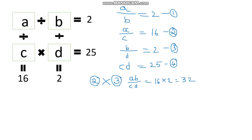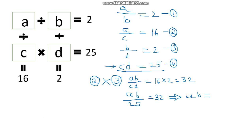We know from equation number 4 that c·d equals 25. Substituting this in: a·b divided by 25 equals 32. By cross multiplication, a·b equals 32 × 25, which gives us a·b equals 800.